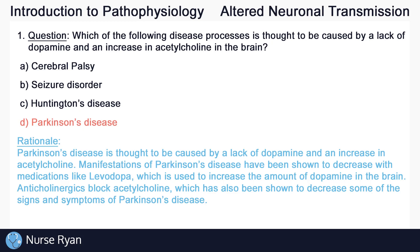Manifestations of Parkinson's disease have been shown to decrease when taking medications like levodopa, which is used to increase the amount of dopamine in the brain. Anticholinergics block acetylcholine, which has also been shown to decrease some of these signs and symptoms of Parkinson's disease.